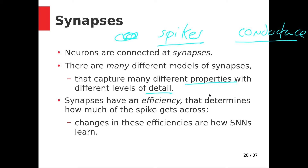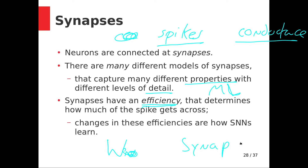With many models at different levels of detail, for machine learning we can probably use the simplest one. Synapses have an efficiency that determines, loosely speaking, how much of the spike gets across — basically, for any given spike, how much energy is deposited on the post-synaptic neuron, or what is the change in voltage of the post-synaptic neuron. Adjusting those efficiencies is how spiking neural networks learn. If artificial neural networks have big weight matrices, spiking neural networks have the efficiency of these synapses, and adjusting those synaptic efficiencies is how they learn.